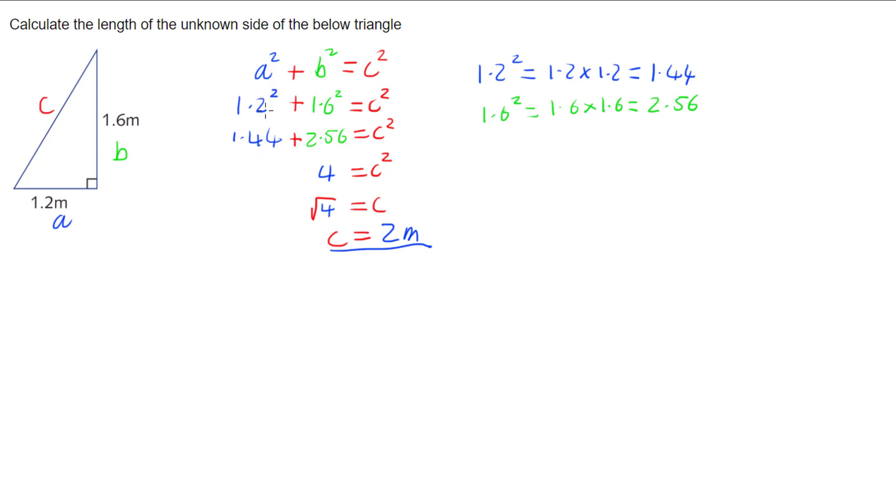And that's it. By using our Pythagoras' rules, C squared equals A squared plus B squared, or A squared plus B squared equals C squared, we can work out the length of our hypotenuse.